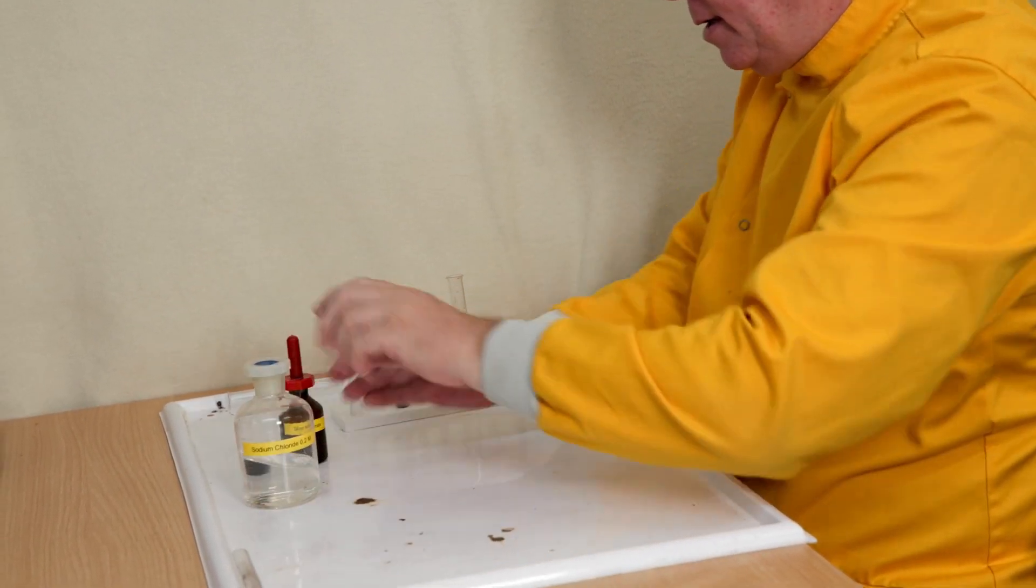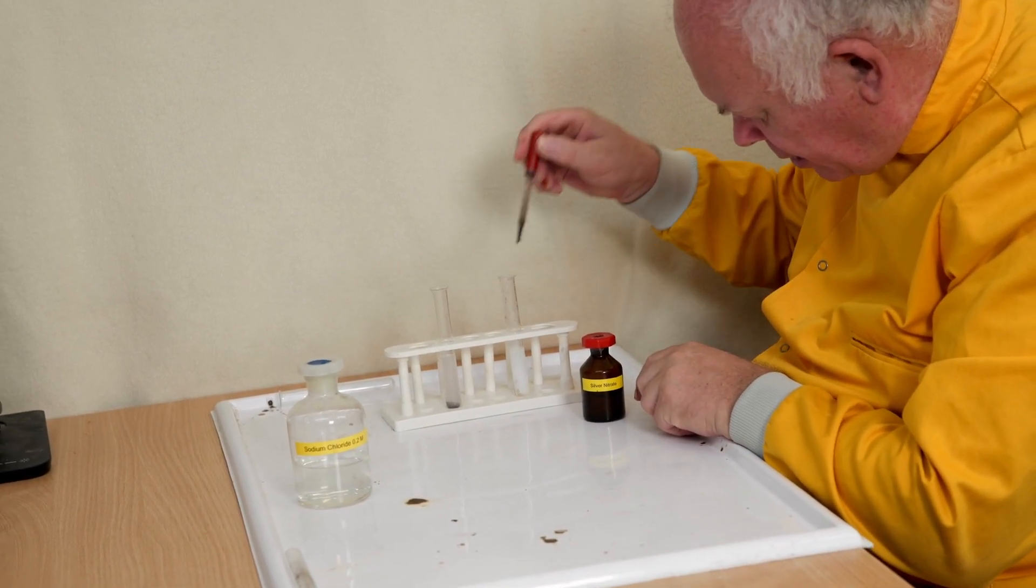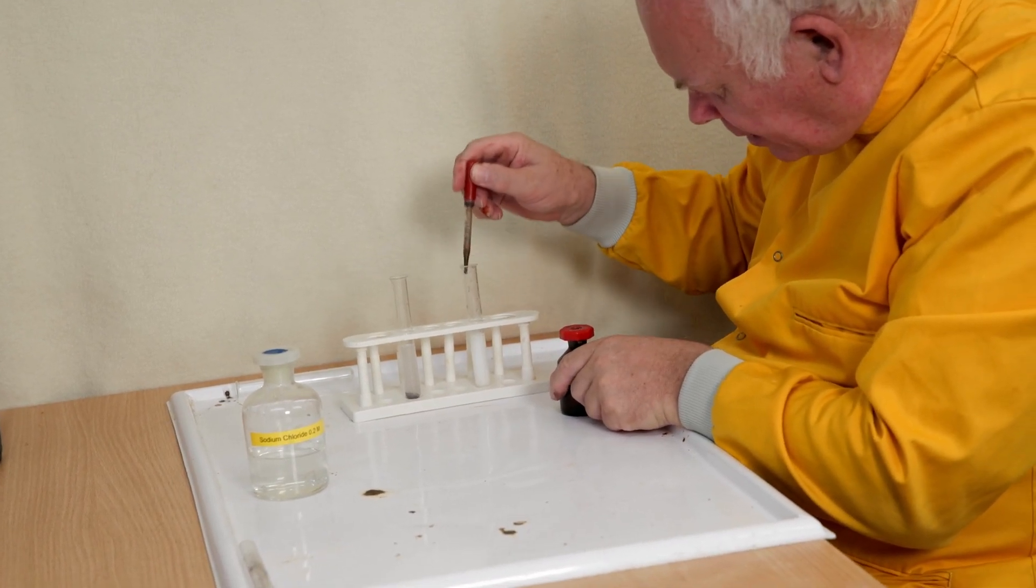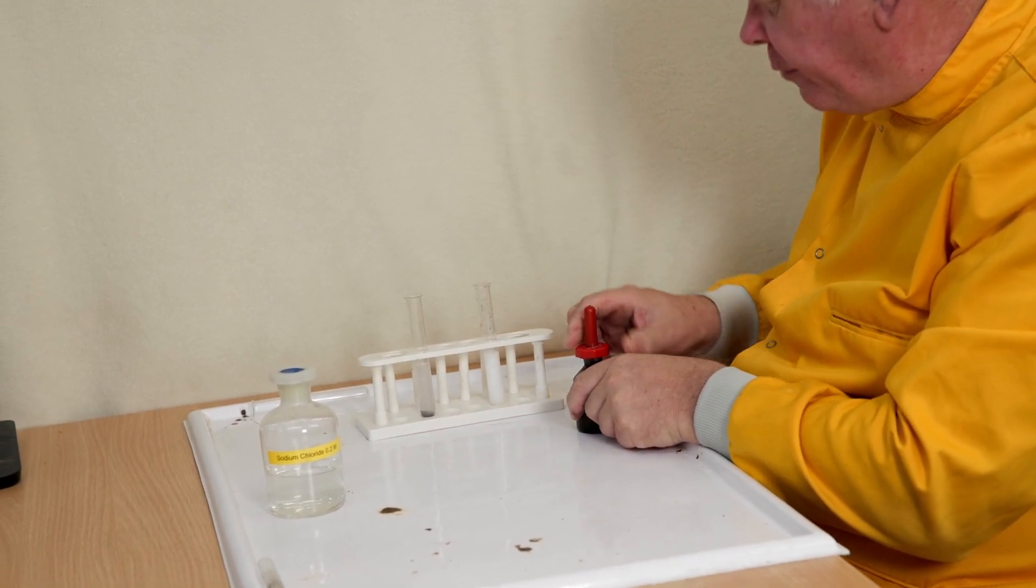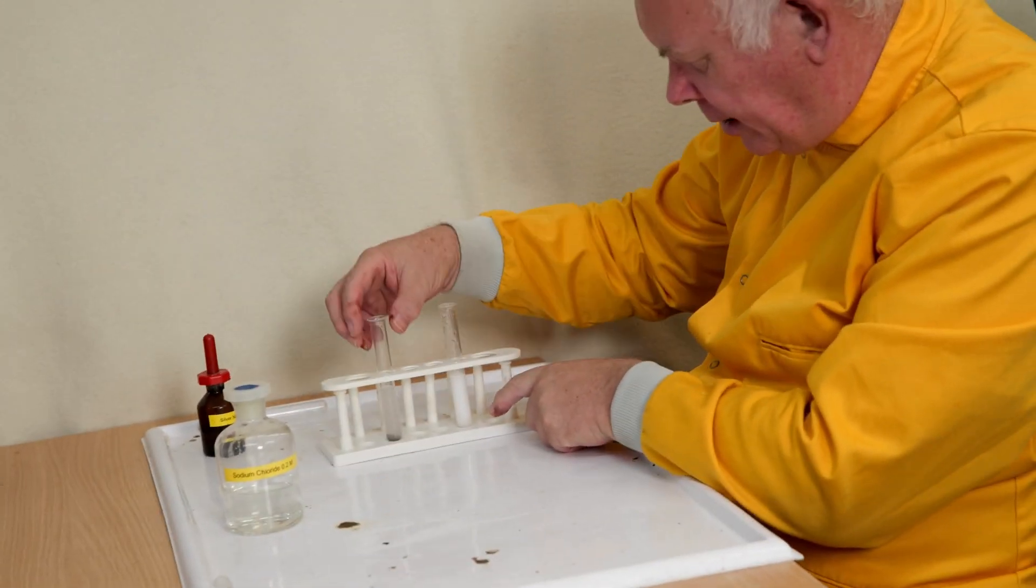And then let's put in a little squirt of the silver nitrate. And you can see it goes this white color. But if I leave it, it's going to stay this white color.